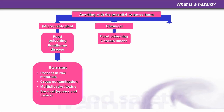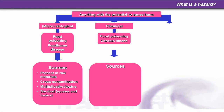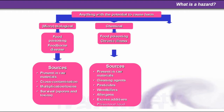Chemical hazards can cause food poisoning and chronic illnesses, where there is a buildup of chemicals in human tissue. Sources include: chemicals present in raw materials, cleaning agents, pesticides, weed killers, allergens, excess additives, and poisonous food.